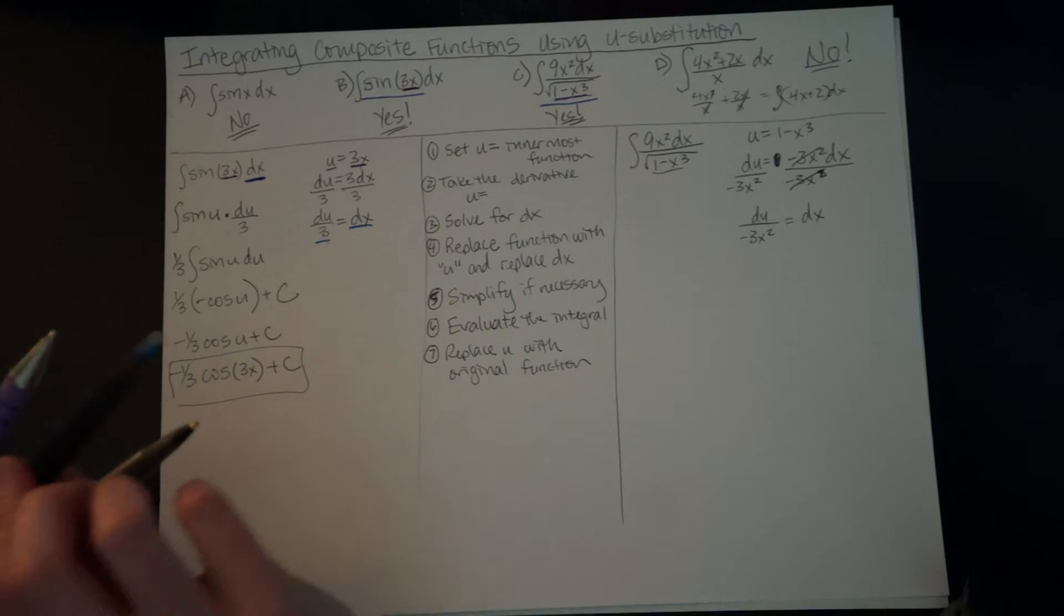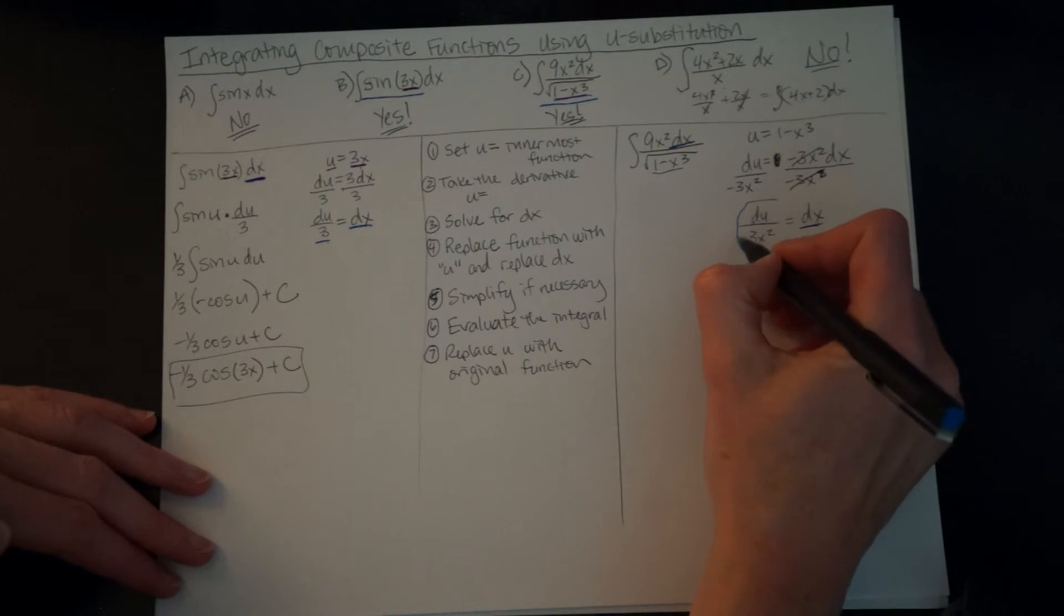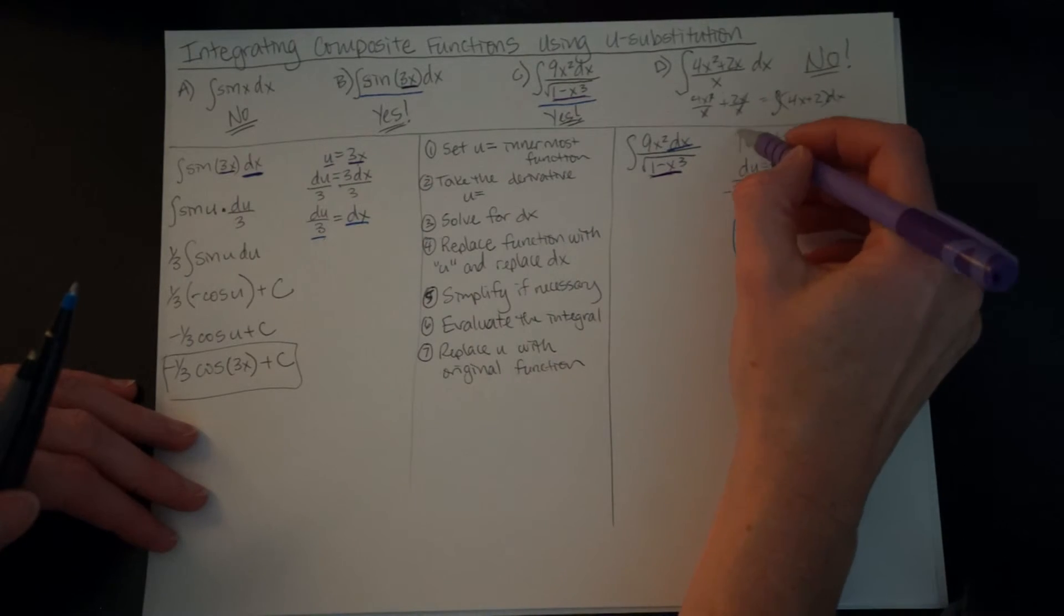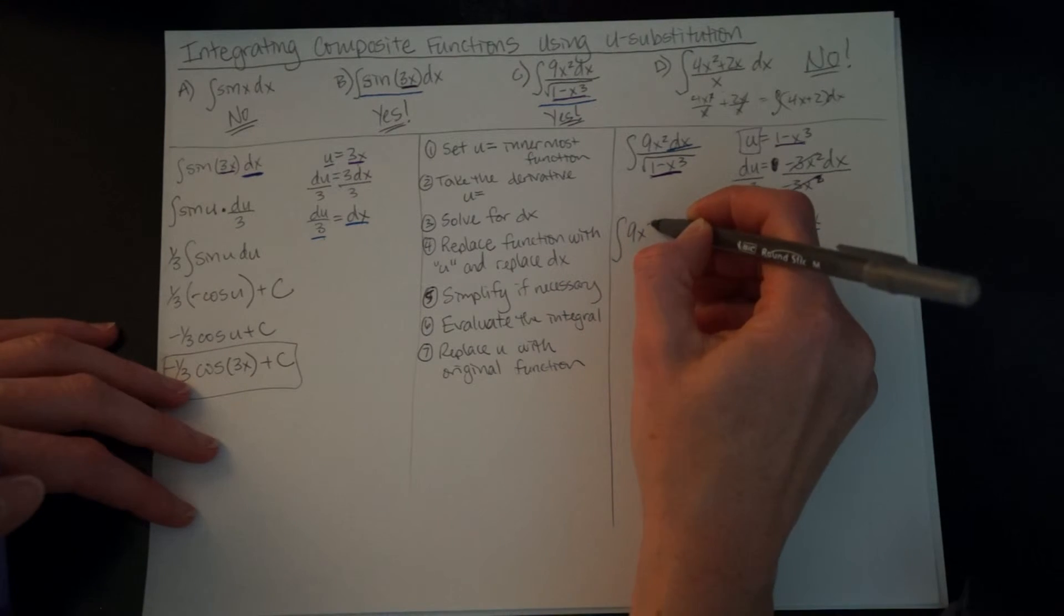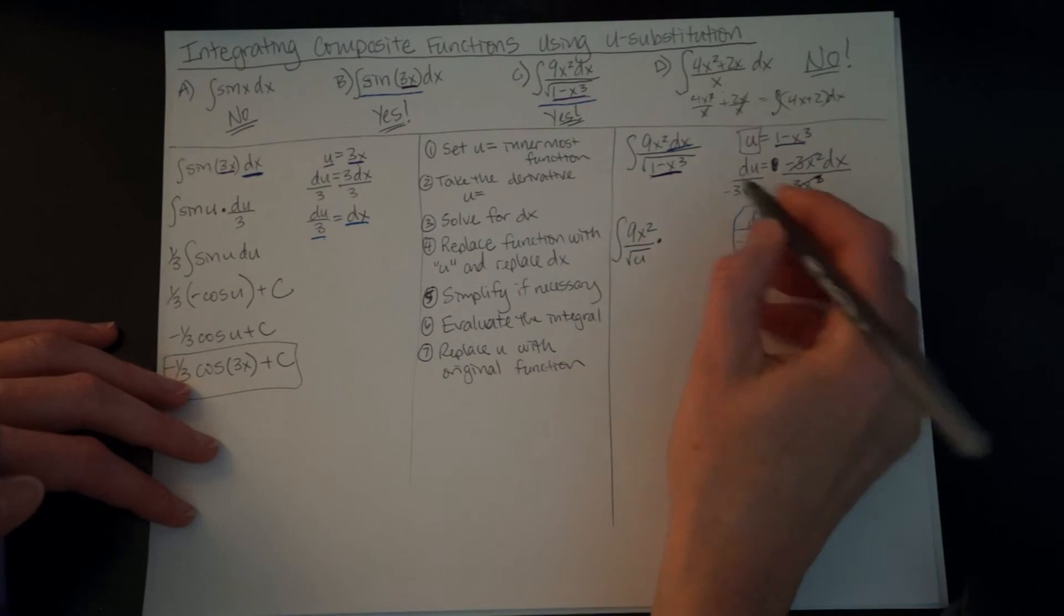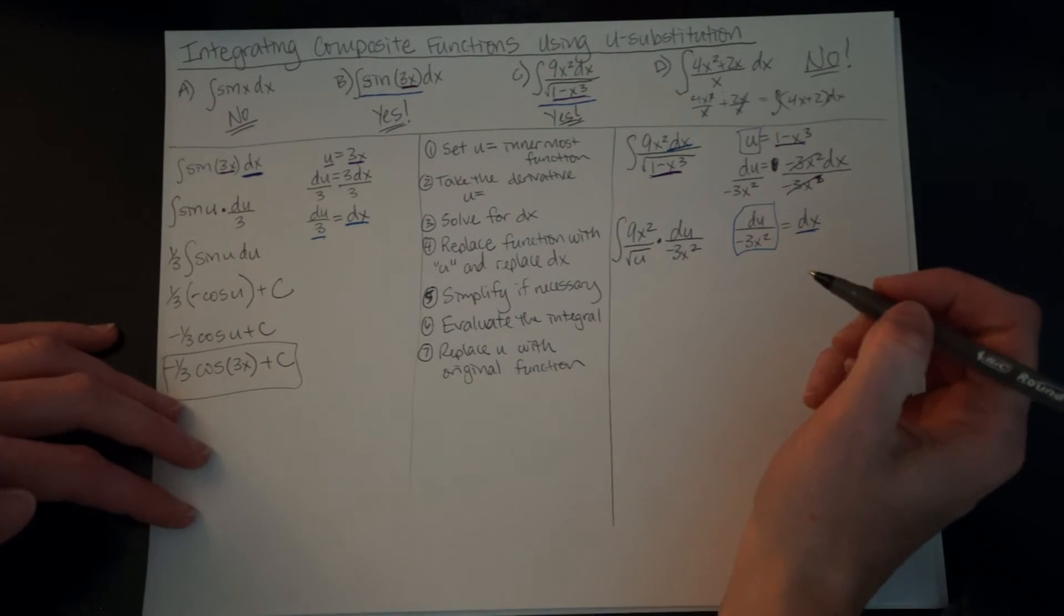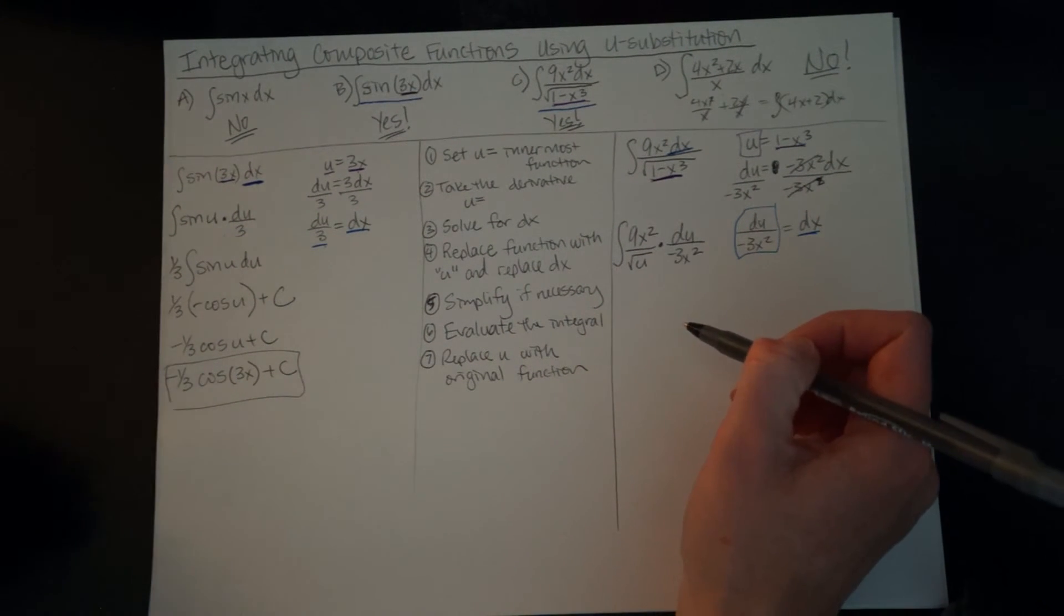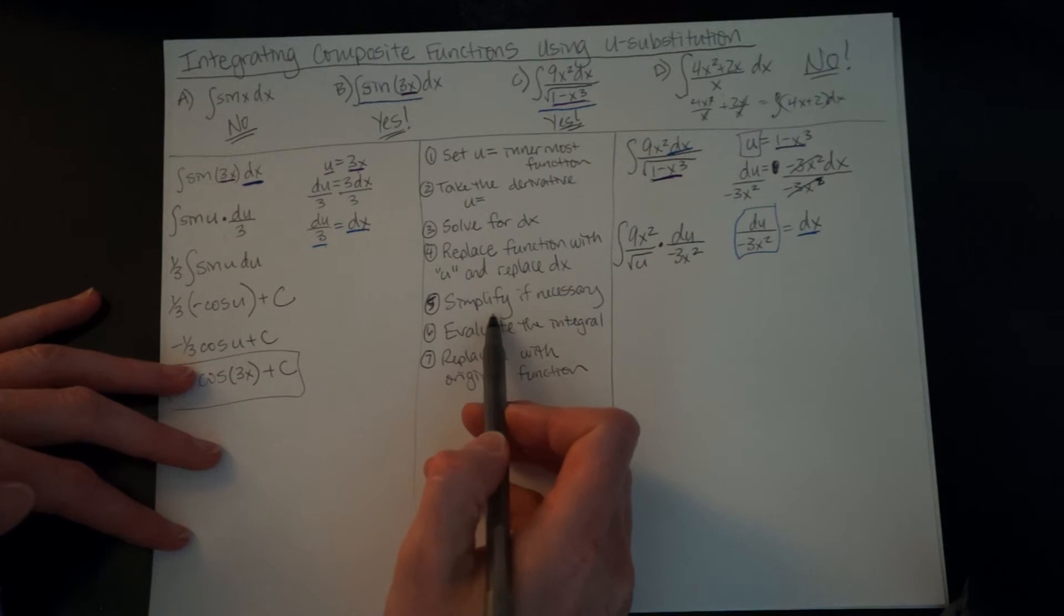So our next step says, replace our function with u and dx. So this dx here is right here. It's going to be replaced with this. And this right here is our u. It's going to be replaced with the u here. So when we go to do this, we're going to have 9x². I'm going to put it over the square root of not 1 minus x³, but u, because I'm replacing it, times our dx is du over negative 3x². And you're going to say, Ellen, there's a problem here. We've got x² and we have u's. And how are we supposed to take the integral of that? I don't know how to do that. And I'm going to say, you're right. You really don't know how to do that, but you do know how to simplify if necessary.